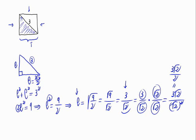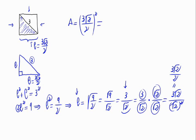So, the side length is 3 times the square root of 2 divided by 2. The area of the square is the side length squared, that is (3 times the square root of 2 divided by 2) squared. As everything is squared, that is 3 squared times the square root of 2 squared, divided by 2 squared.